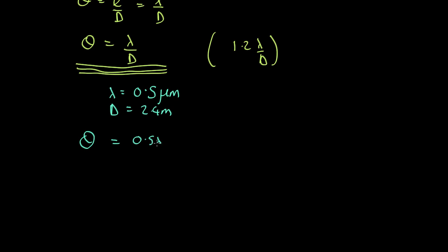So the diffraction limit, the angular limit, is going to be 0.5 times 10 to the minus 6, to convert from micrometers into meters, over 2.4, which is 2 by 10 to the minus 7 radians, which is 0.04 arc seconds.